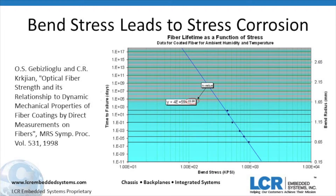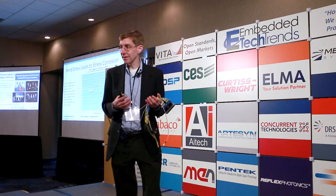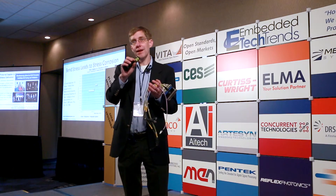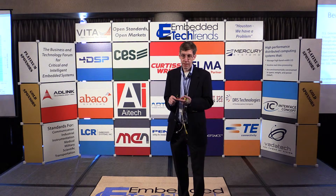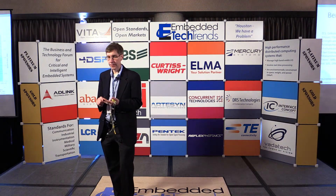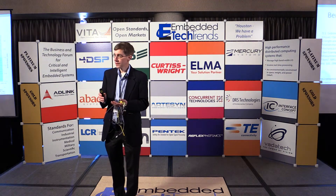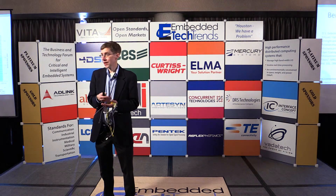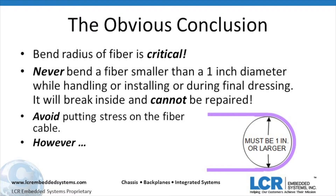The other interesting thing about fiber — it has been studied. The guys at Lucent, Alcatel, AT&T, et cetera deployed probably billions of miles of fiber optics and found it breaks in ways you don't expect. One study I found most interesting: stress leads to what they call stress corrosion. The outer part of the glass starts corroding away, and that is based on time, the stress on the cable, and the bend radius. What you'll find is it's not going to necessarily break instantaneously — sometimes it'll break days, weeks, or months after deployment. This is a real pain: if the plane's already in service and it breaks, they have to take out everything to repair the fiber optics. The obvious conclusion is that bend radius is critical — never bend it smaller than a one-inch diameter. Be very gentle with handling, and avoid putting stress on it.